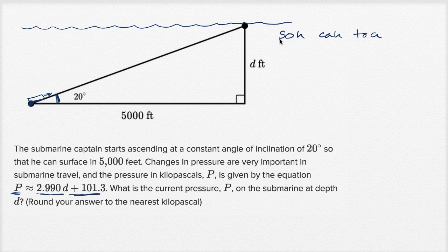Where SOH says that sine is equal to the ratio of the opposite side to the hypotenuse, cosine of an angle is equal to the ratio of the adjacent to the hypotenuse, and tangent of an angle is equal to the ratio of the opposite side to the adjacent side. So we have our angle here. Now what sides are we trying to deal with?